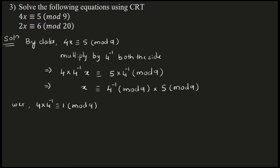When you put 3, it is 12; divided by 9, remainder is 3. Check for 4: it gives 16; divided by 9, remainder is not 1. When you put 7, it gives 28; divided by 9, remainder is 1. Therefore, 4 times 7 is congruent to 1 mod 9, which implies 4-inverse is 7. So in place of 4-inverse in the equation, write 7. Therefore, x is congruent to 7 times 5 mod 9.